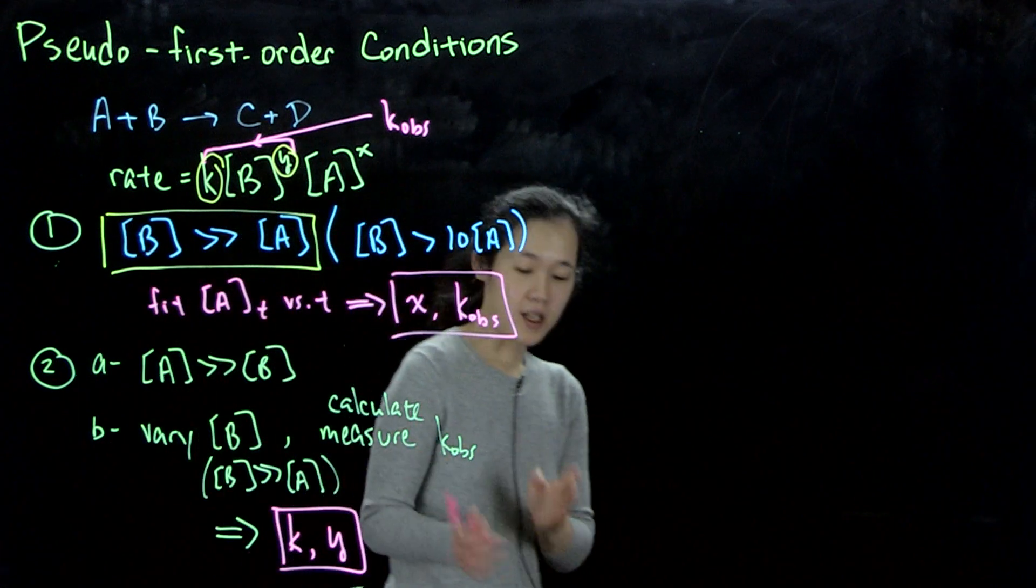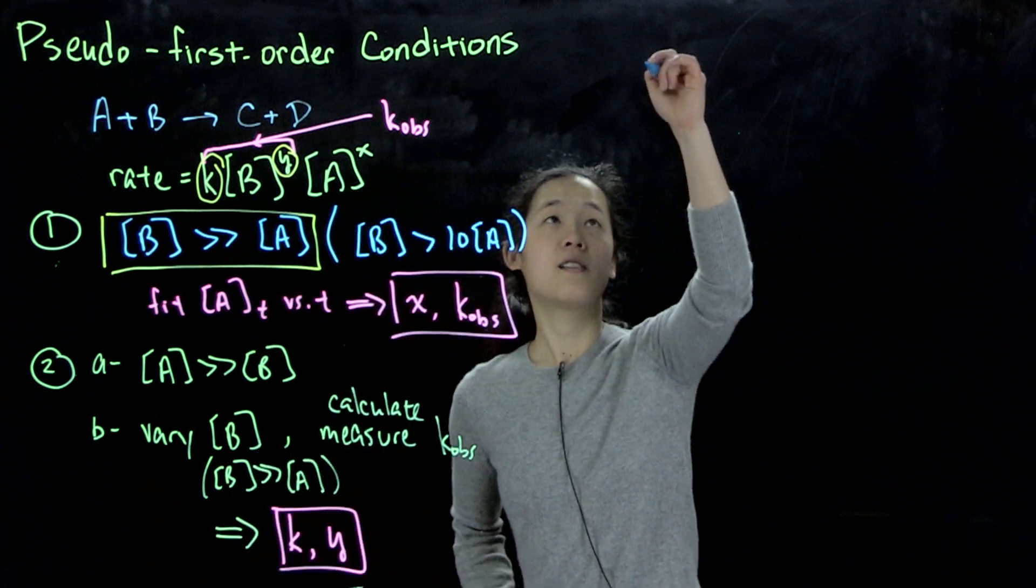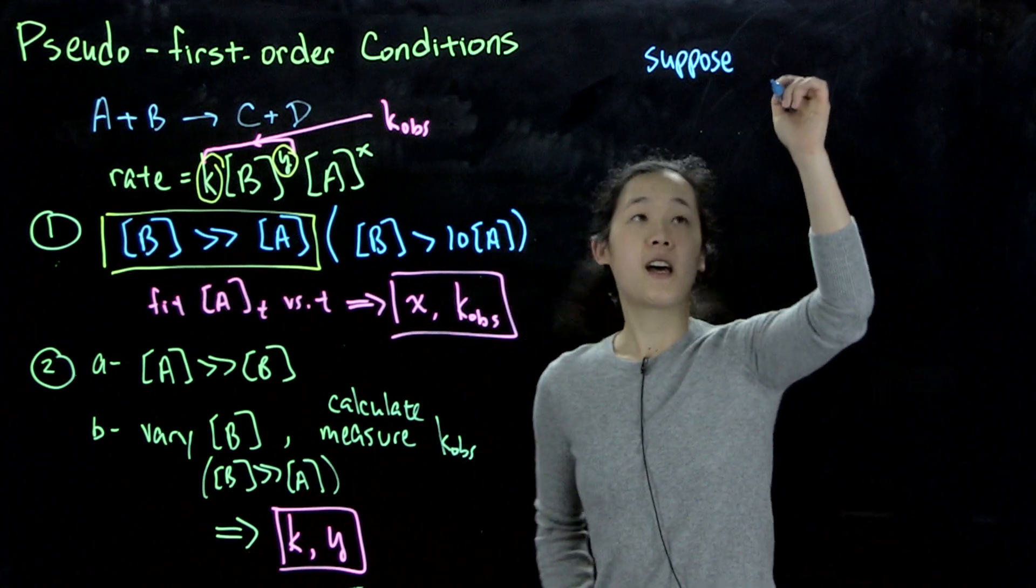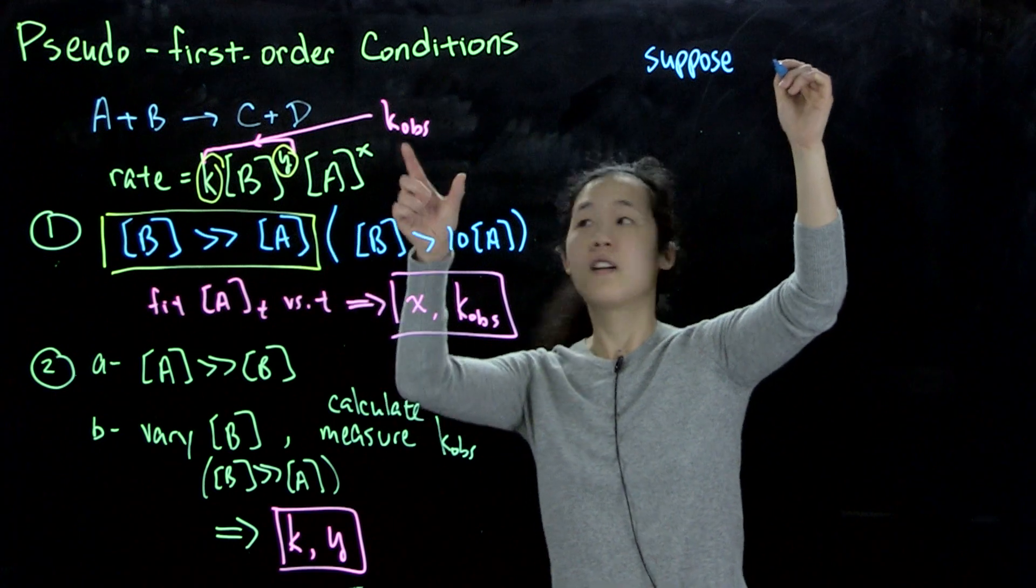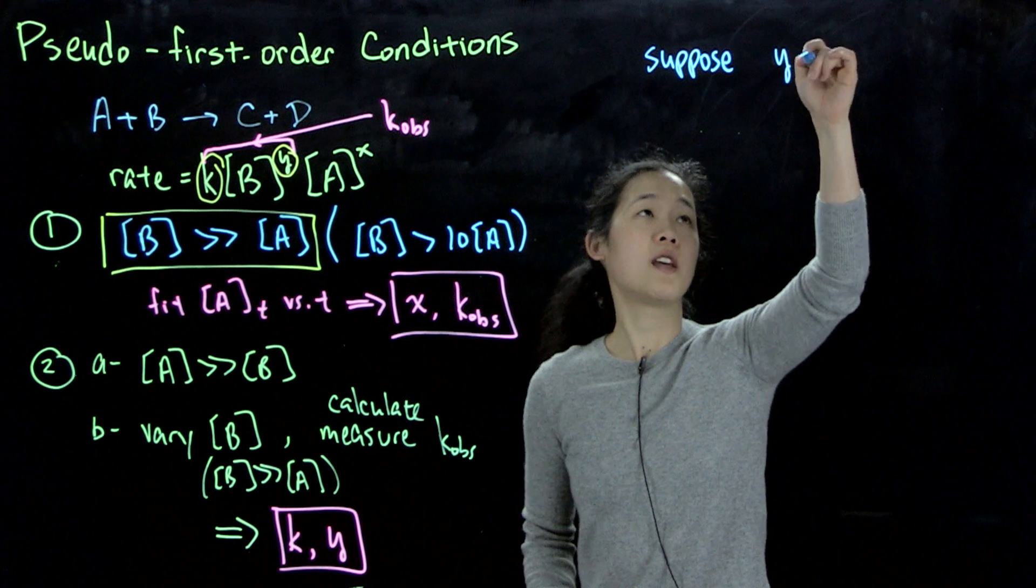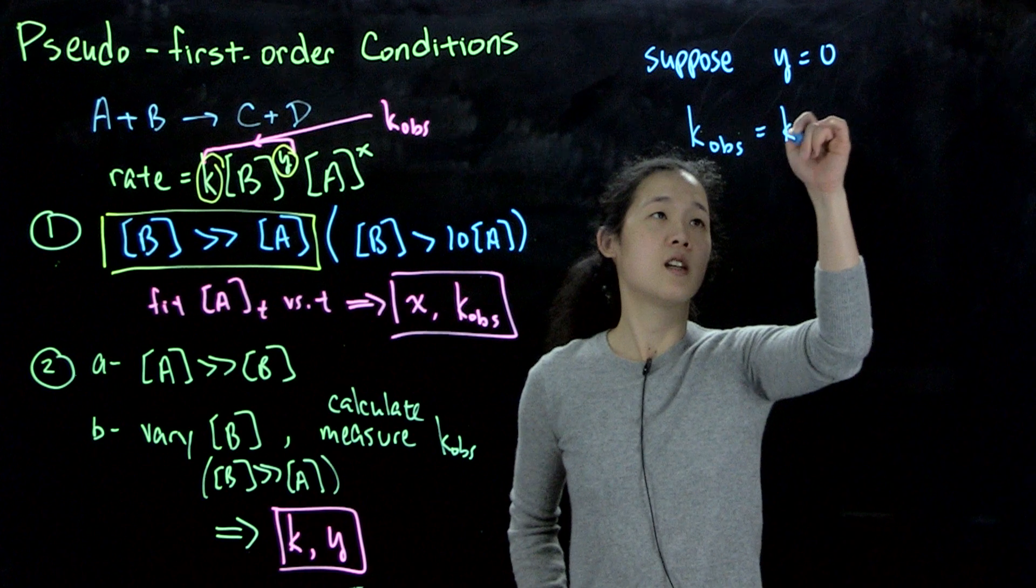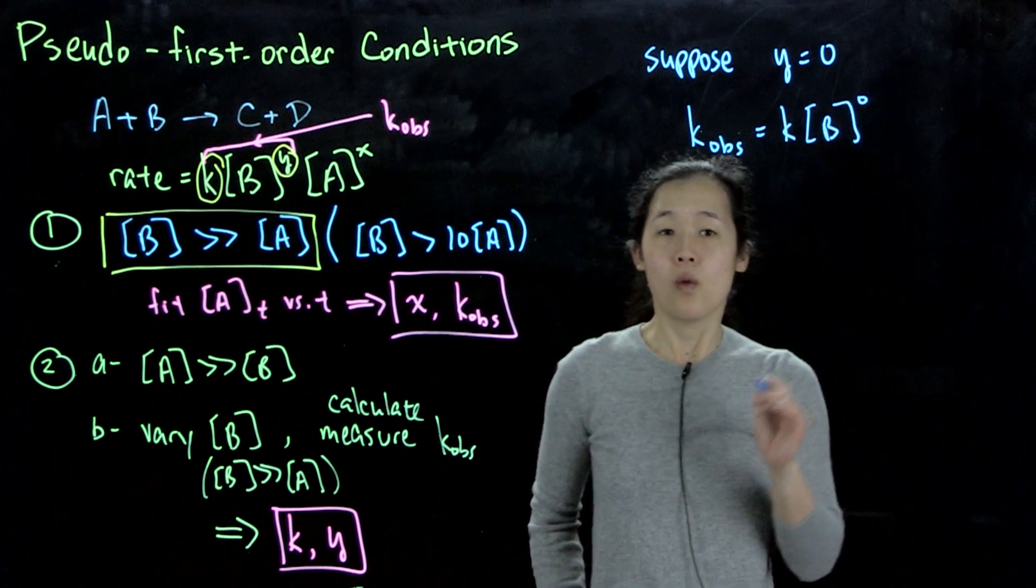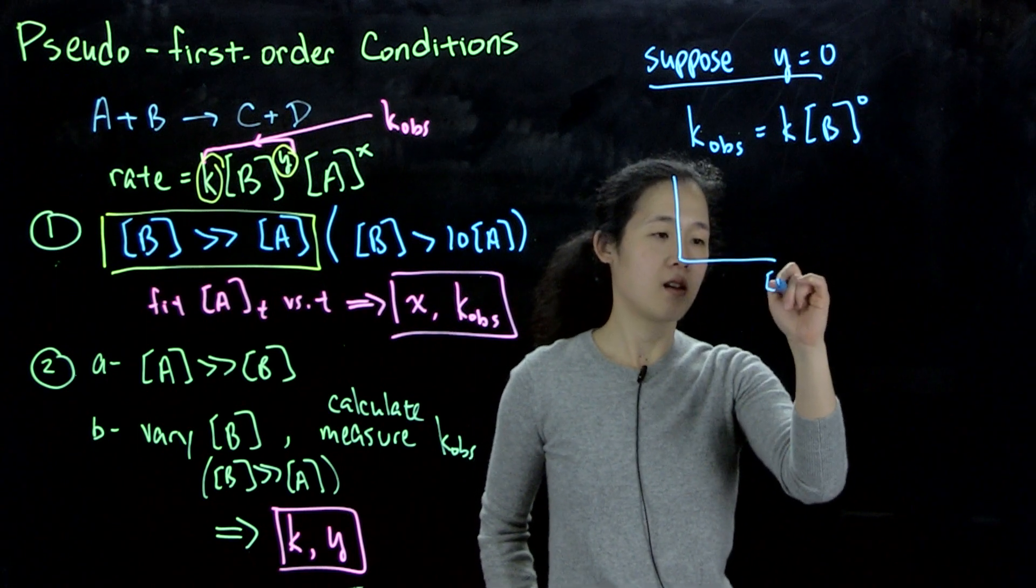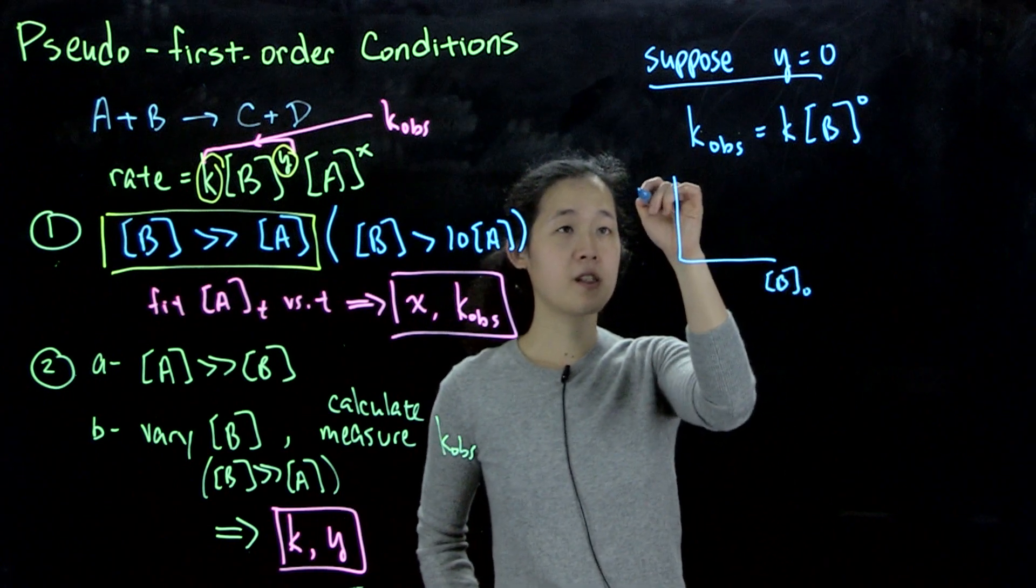So what does this look like in actual, in a typical experiment? So let's suppose that, so here we're looking at, again, k_ob equals k times b^y. So suppose y equals 0. So again, k_ob will then equal k, b to the 0. What we will expect to see, in scenario one, is if we plot our initial concentration of b, so we're varying this, versus k_ob, this expression will mean that this should be constant.